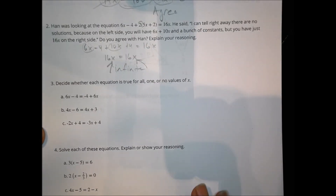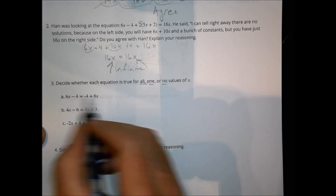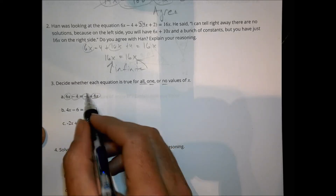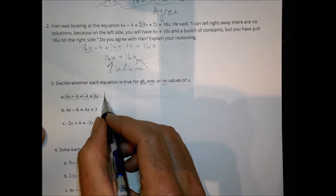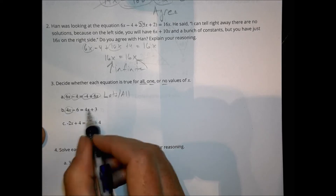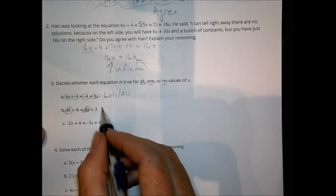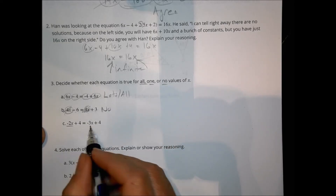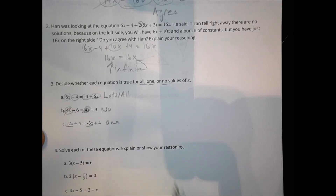Homework number 3: Decide whether each equation is true for all, one, or no values. The first has 6x and 6x matching, with negative 4 and negative 4 matching — true for all values. The second has 4x on both sides that cancel, leaving negative 6 equals 3, which is false — no values. The third has all different terms, so it will have one value — we'd get one solution if we solve it.